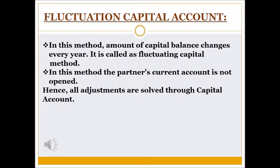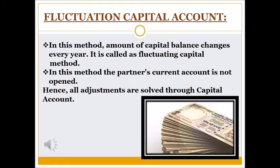The second method is Fluctuating Capital Method. In this method the amount of capital balance is going to be changed every year, and that is why it is known as Fluctuating Capital Method. In this method there is no need to prepare a Partners Current Account — we prepare Partners Capital Account only, and all adjustments related to partners are solved in this account.